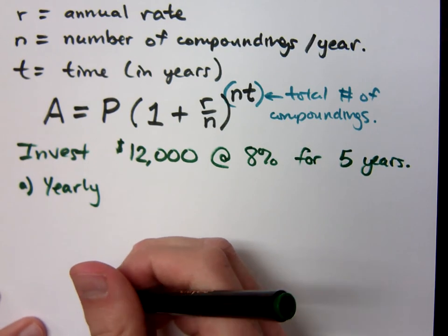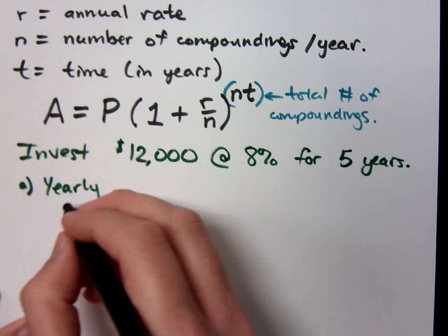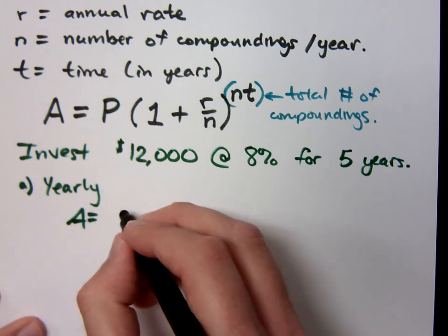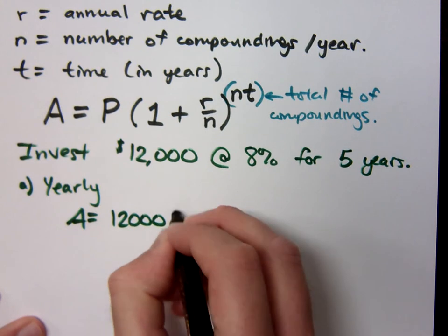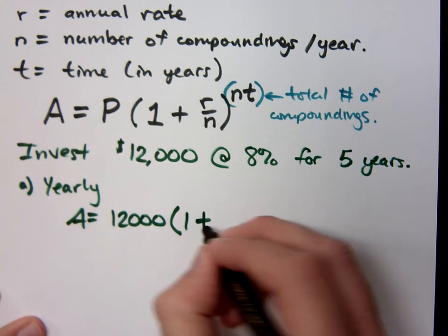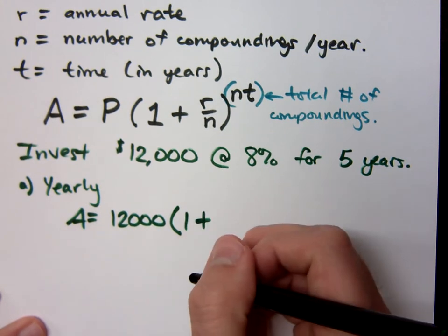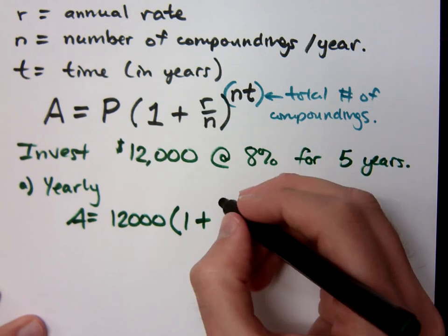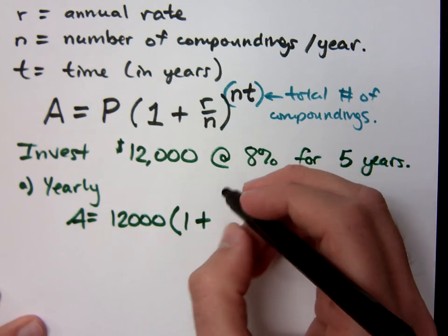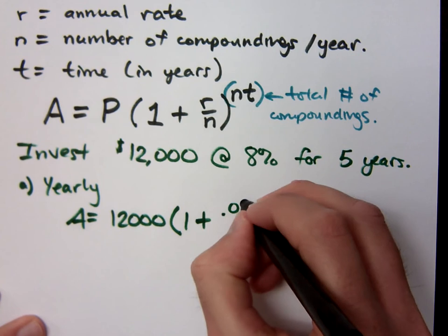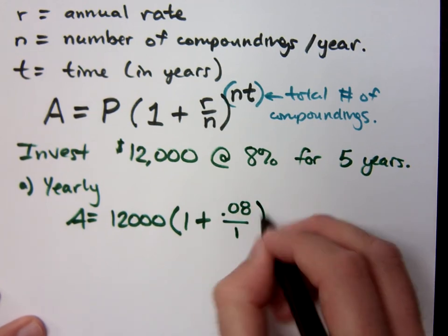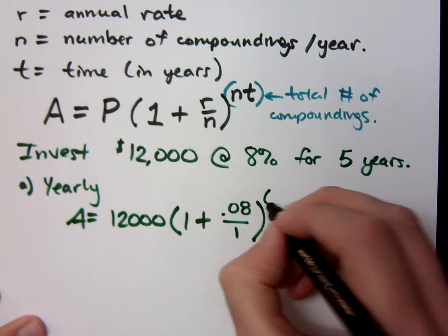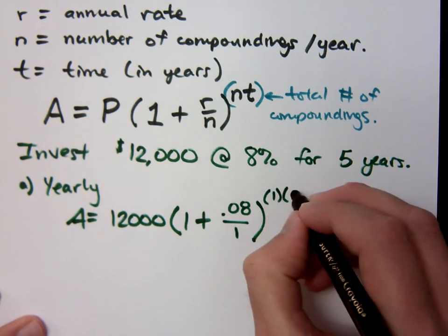If I do yearly compounding, that means that my amount of money is my principal, 12,000, times 1 plus, what's your rate? 8%. So you better make sure you convert that correctly as a decimal. So that's .08 over how many times per year am I doing this? One. n is again 1, and your number of years is 5.